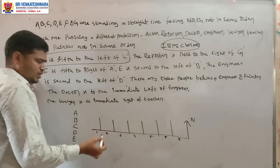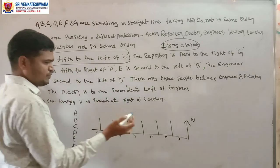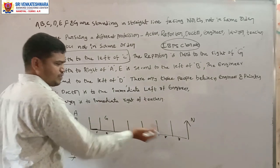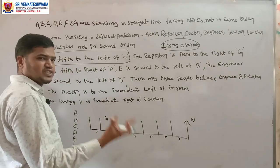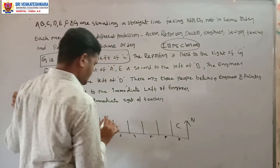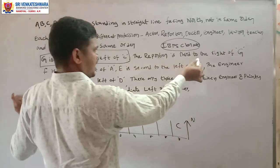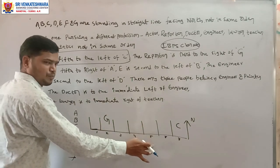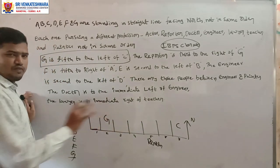For G to be fifth to the left of C, with only 7 positions, C must be at position 6 and G at position 1. There are no other possibilities. So C and G positions are confirmed. The reporter is third to the right of G, so counting 1, 2, 3 from G, the reporter's position is confirmed — profession is confirmed even though the alphabet is not yet fixed.